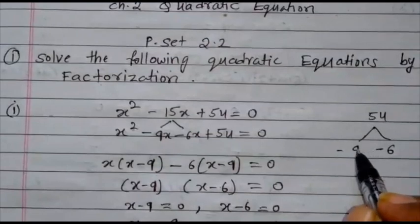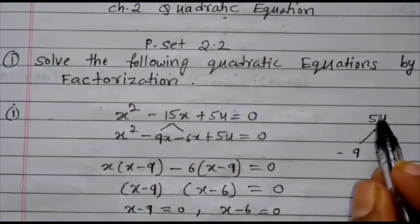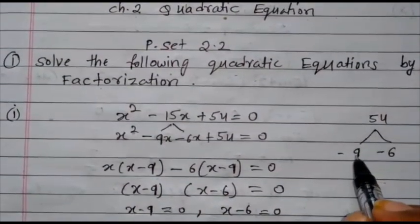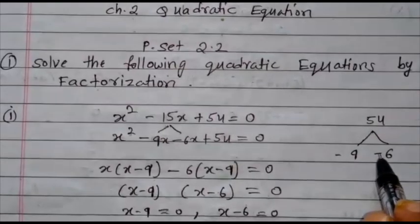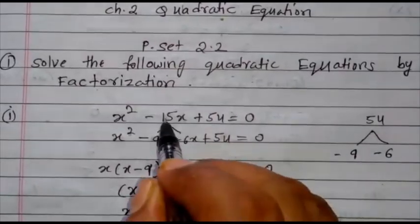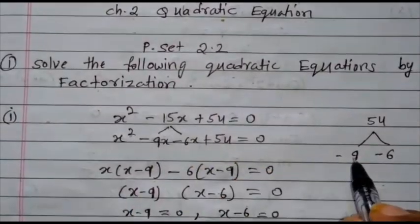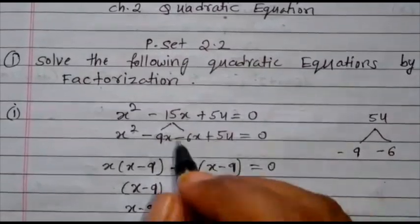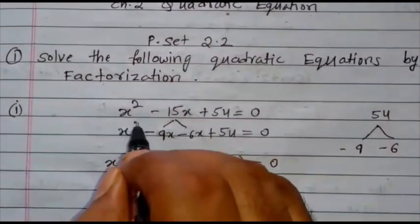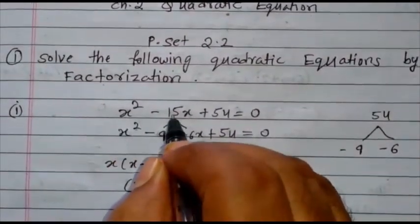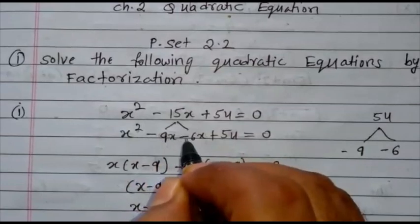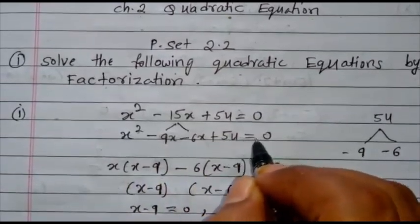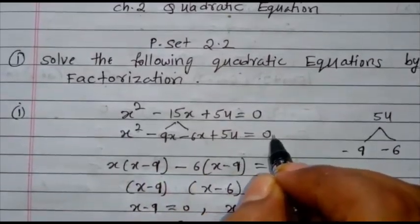See here: 9 × 6 is 54. But if we add minus 9 and minus 6, we get minus 15. So the factors are minus 9 and minus 6. Write: x² minus 15x as minus 9x minus 6x plus 54 is equal to 0.